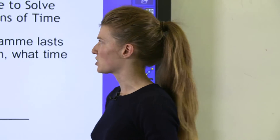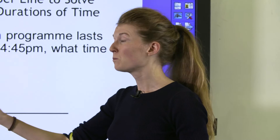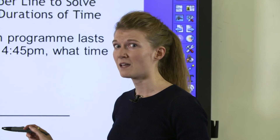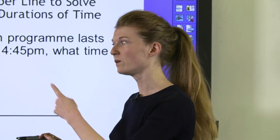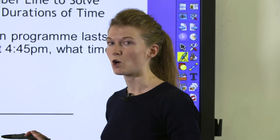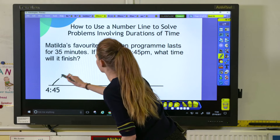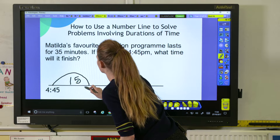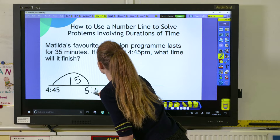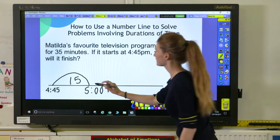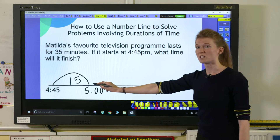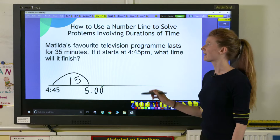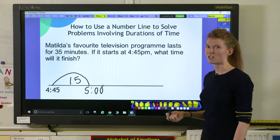The first question I'd ask pupils is how many more minutes do we need to jump to get to the next hour, and hopefully they can tell me that a jump of 15 minutes will take us to 5 o'clock. It's important that pupils label their jumps so they can keep track and see when they've reached 35 minutes.